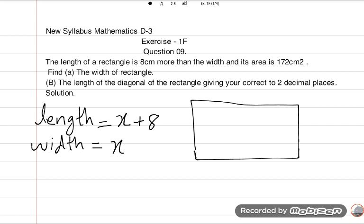So the relation between length and width is x. Understand? Length is more 8 centimeters than width because their length and width has same relation. That's why we use the same variable. And the second statement of the question is area is 172 centimeters square, given in the question.